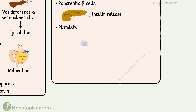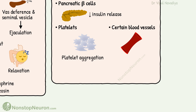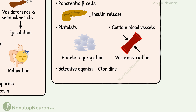Next are platelets, where alpha-2 receptors play a role in platelet aggregation. And finally, they are also seen in certain blood vessels, where they cause vasoconstriction. Alpha-2 selective agonists include clonidine, and the selective antagonist is yohimbine.